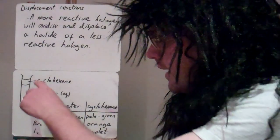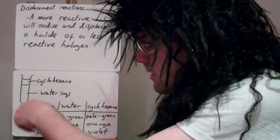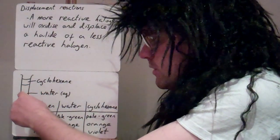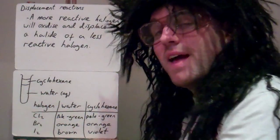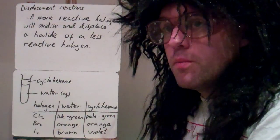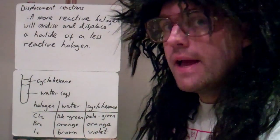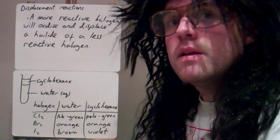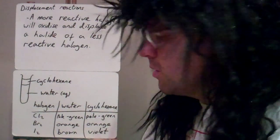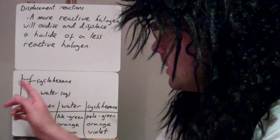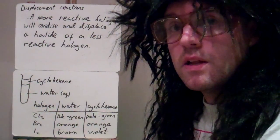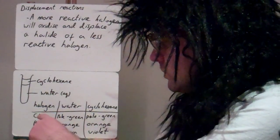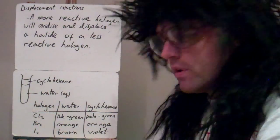We have a test tube with an aqueous layer of water, and in the water we have the halide ion dissolving — it could be a potassium halide like KI, a sodium halide, or any metal halide, as long as it's soluble. We also have a cyclohexane layer to help us see the colours and keep track of what's going on in the reaction, because the different halogens in solution have different colours.